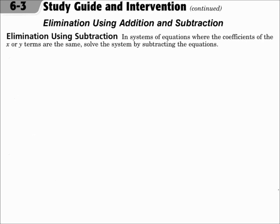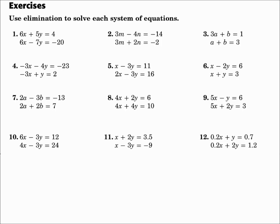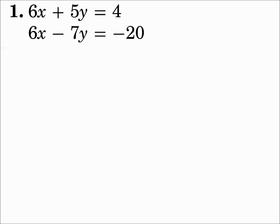Now we'll do some with elimination with subtraction. The variables with the same coefficient — if the signs are the same, you will subtract the equations. Number 1. 6x plus 5y equals 4, and 6x minus 7y equals negative 20. Everything is lined up. The x's have the same coefficient. They're both positive, so the signs are the same, so we'll subtract the equations.